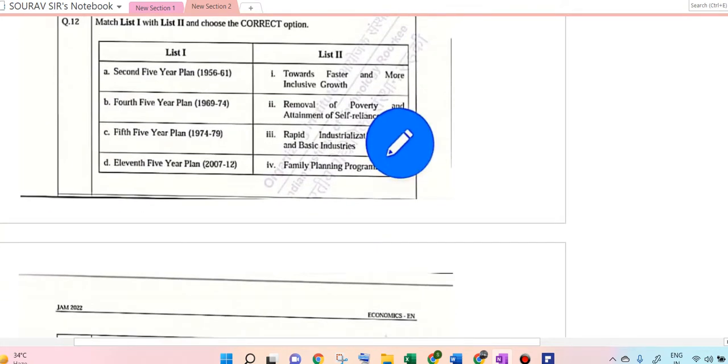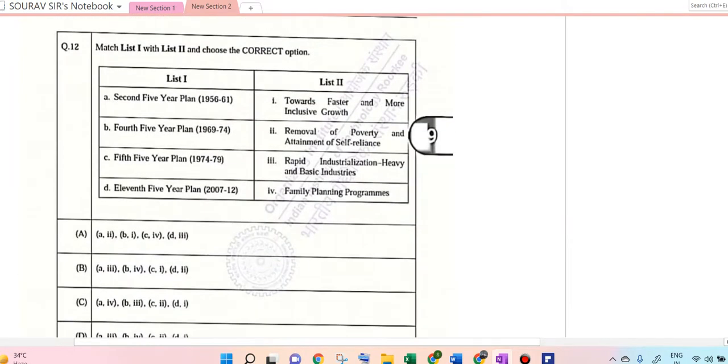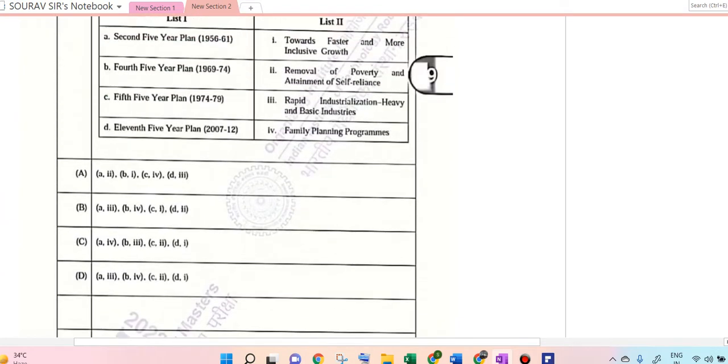Next question is on matching. There's some data given over here, so you need to match with this. Second Five-Year Plan was with rapid industrialization and heavy basic industries. Fourth Five-Year Plan's main motto was family planning programs. Fifth Five-Year Plan comes with removal of poverty. Eleventh Five-Year Plan was with faster and more inclusive growth. So option D is the correct one.